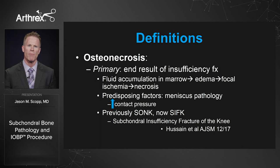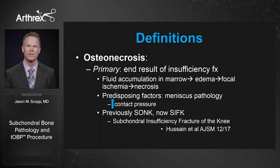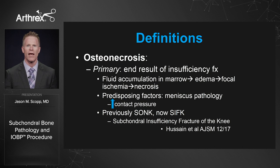Osteonecrosis is the primary end result of an insufficiency fracture. Fluid will accumulate in the bone marrow, leading to edema, which leads to focal ischemia, which ultimately leads to necrosis. There are predisposing factors: meniscus pathology — oftentimes on MRI we see a posterior horn medial meniscus tear, which increases contact pressure and sets the stage for the insufficiency fracture. These were previously called SONK, but now we call them subchondral insufficiency fractures of the knee, transitioning away from the term SONK.